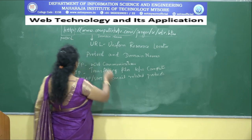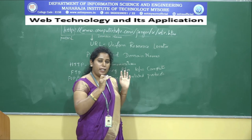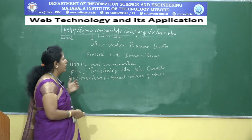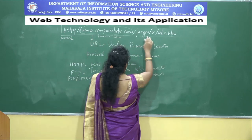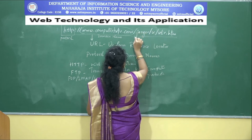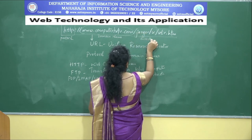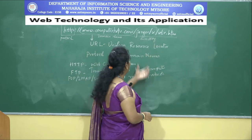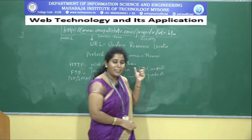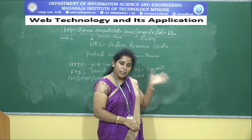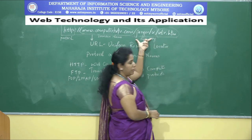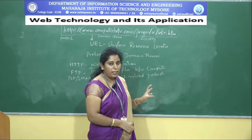Nowadays we don't necessarily use 'www' — we can simply type the domain name directly. In a URL, there are a few more parts: after the domain name, you can notice directory paths and a file name. The directory parts represent the path where the requested data is stored on the server, and the last part is the file name of the resource being requested.